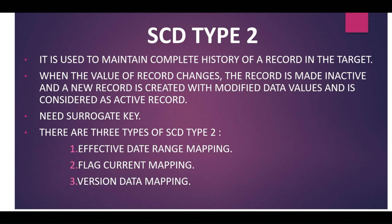There are three types of SCD Type 2 we can implement. The first is the effective date range mapping, using start date and end date. The second is the flag current active flag mapping, where a flag marks records as active or inactive. The third is version data mapping. I will explain each of these approaches one by one.